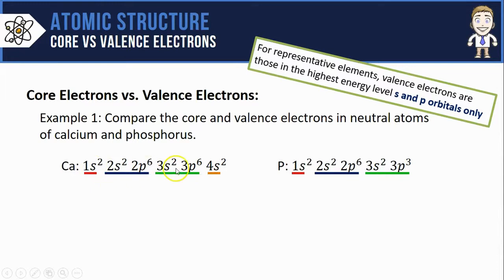S and P orbitals only will count, so in calcium, it has the two electrons in the 4s orbital.